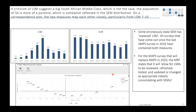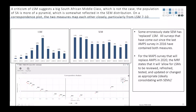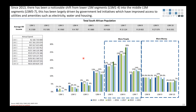Vasu Chetty from Durban has a question: what is the source of your information, and do you go right down to province and suburb level?